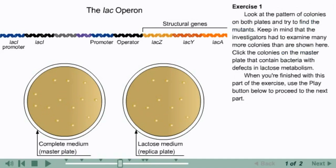Look at the pattern of colonies on both plates and try to find the mutants. Keep in mind that the investigators had to examine many more colonies than are shown here. Click the colonies on the master plate that contain bacteria with defects in lactose metabolism.